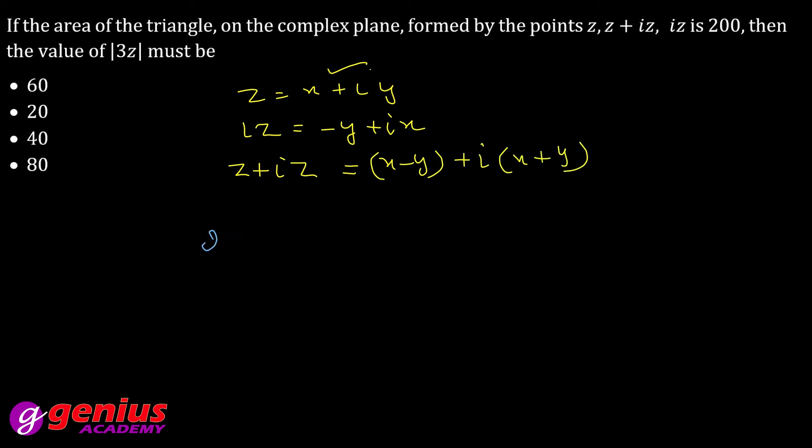According to question, area of triangle = 200. Formula is half of determinant: x, y, 1; minus y, x, 1; x minus y, x plus y, 1. Apply R3: R3 minus R2 minus R1. This operation applied, ye ho jayega x, y, 1; minus y, x, 1; zero, zero, minus 1.